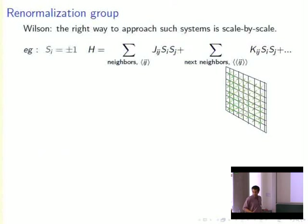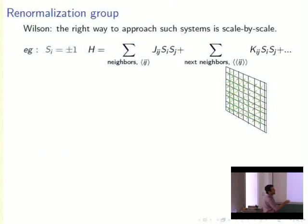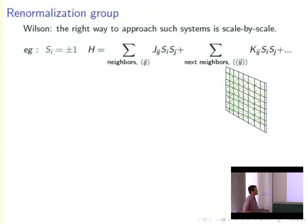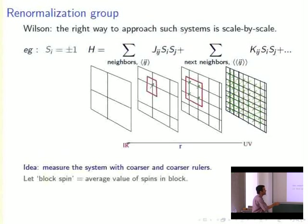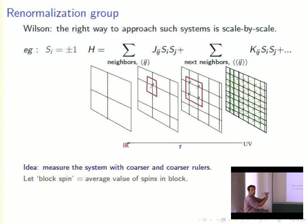Wilson's insight was that the right way to approach such systems is to organize your thinking scale by scale. Consider a two-dimensional lattice with a classical spin at each point, coupled by some Hamiltonian where near neighbors interact. The right approach is to introduce a coarse-graining procedure — to squint at the picture and introduce a family of Hamiltonians labeled by a parameter r indicating how much you're squinting. r=0 is the actual lattice (the ultraviolet), and at each step you group spins into block spins and average over them.